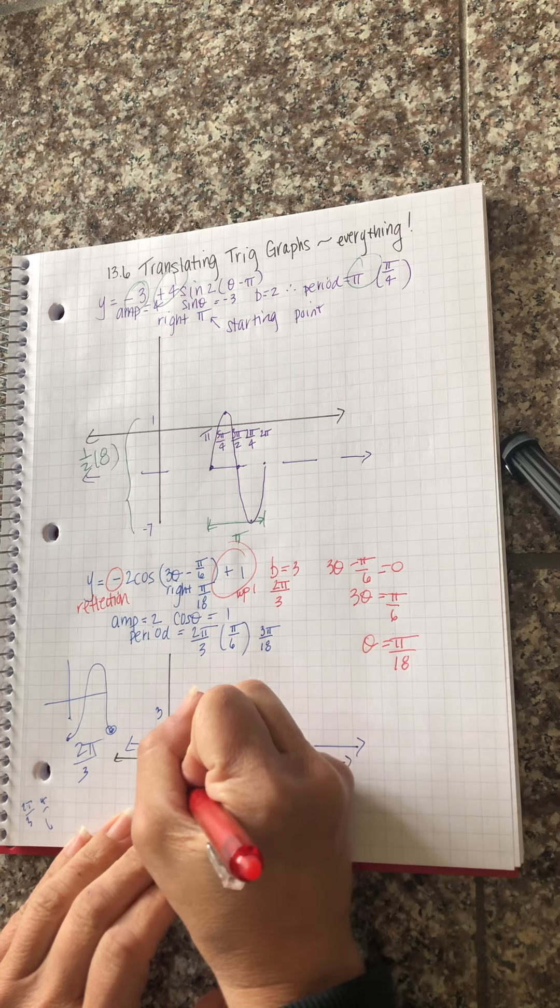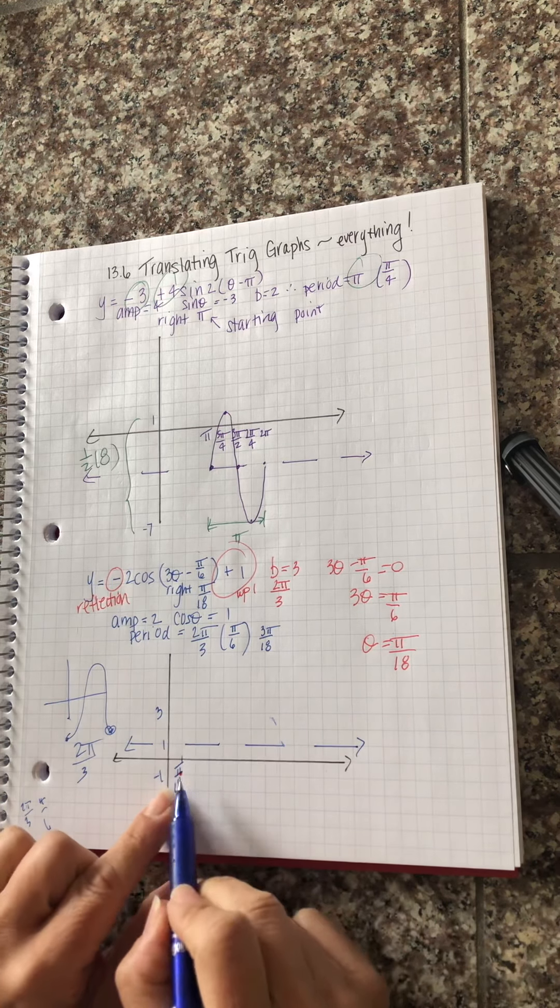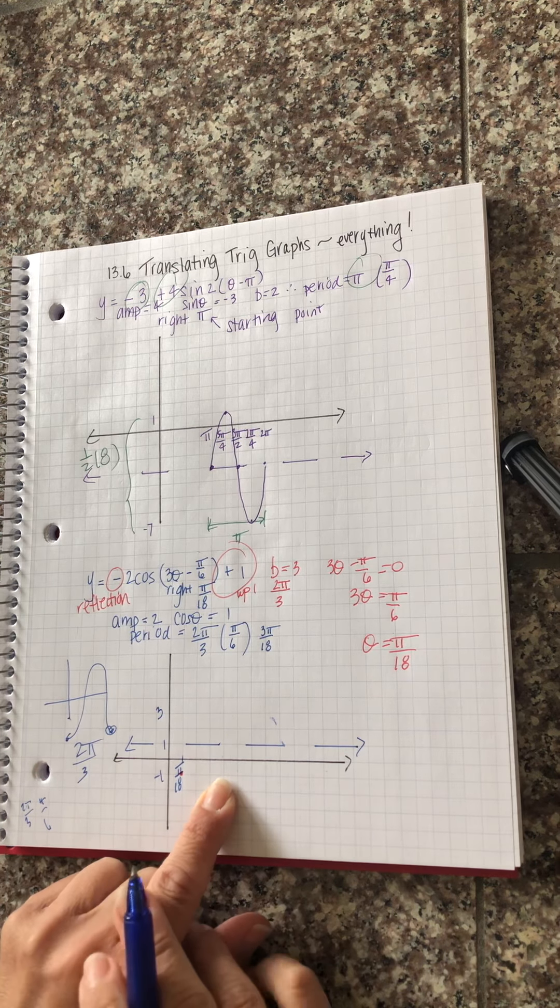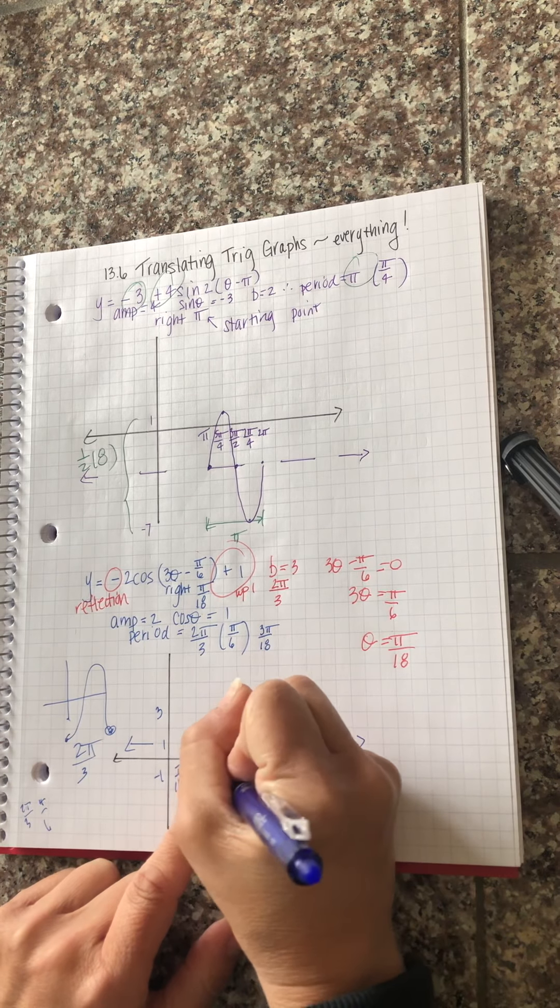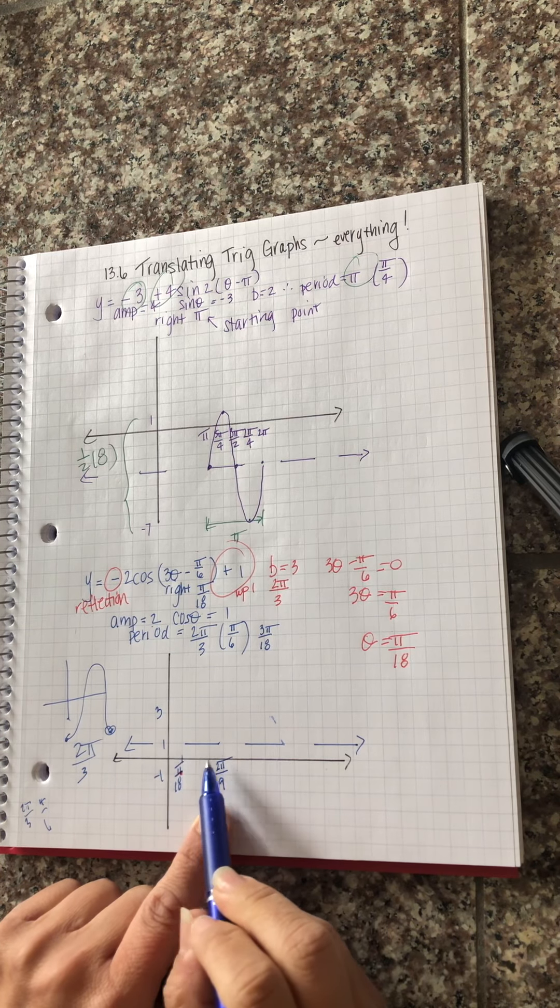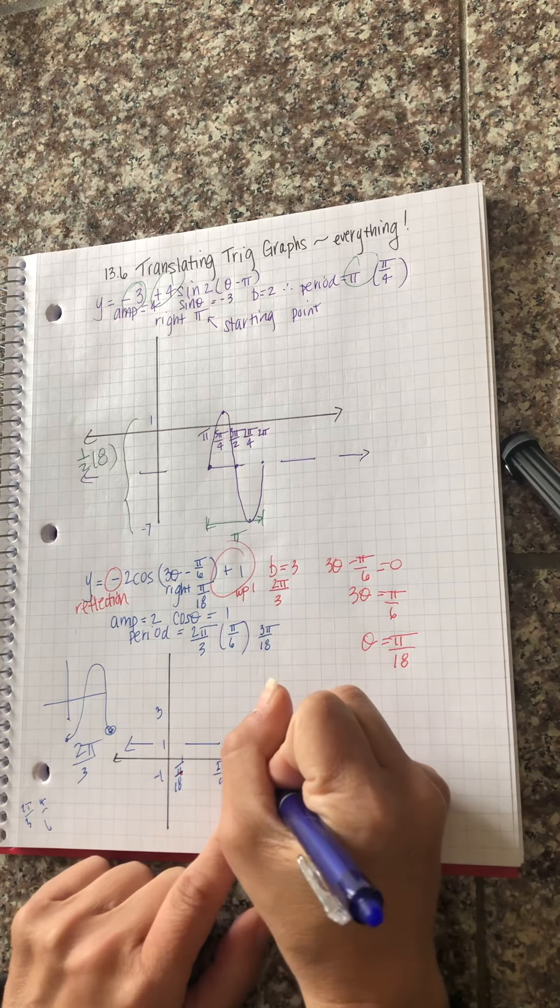Reflected cosine starts at the bottom. My increments are 3 pi over 18. So if it's 1 pi over 18, 1, 2, 3. That's 4 pi over 18, which is 2 pi over 9. 3 more 18. That's 7 pi over 18. 10 pi over 18, which is 5 pi over 9.